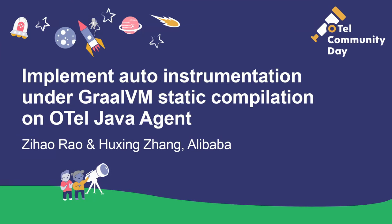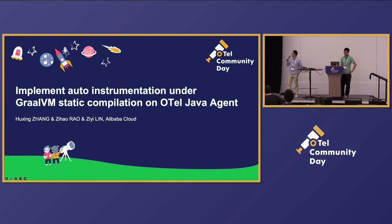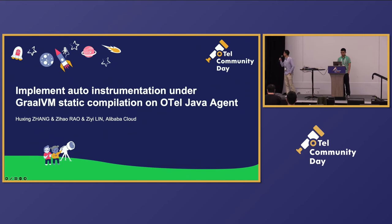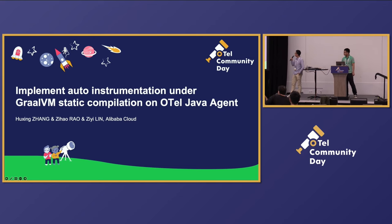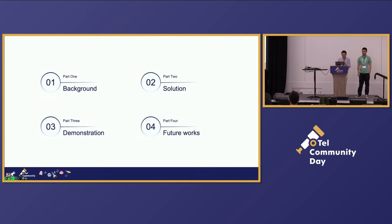This is the first talk for the afternoon. Hello everyone. My name is Hu Xin and this is my colleague Zi Hao. We are from Alibaba Cloud. Today we're going to talk about implementing auto instrumentation under GraalVM static compilation on the OTEL Java agent. This is quite a long title, so I will introduce the first part.